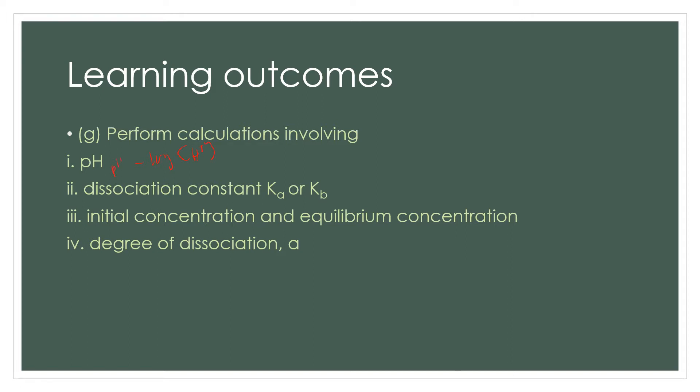This also involves the dissociation constant Ka or Kb — 'a' refers to acid, 'b' refers to base. For K, it is the concentration of the product divided by the concentration of the reactant, since you are dealing with a reversible reaction. So there will be Ka and Kb expressions.